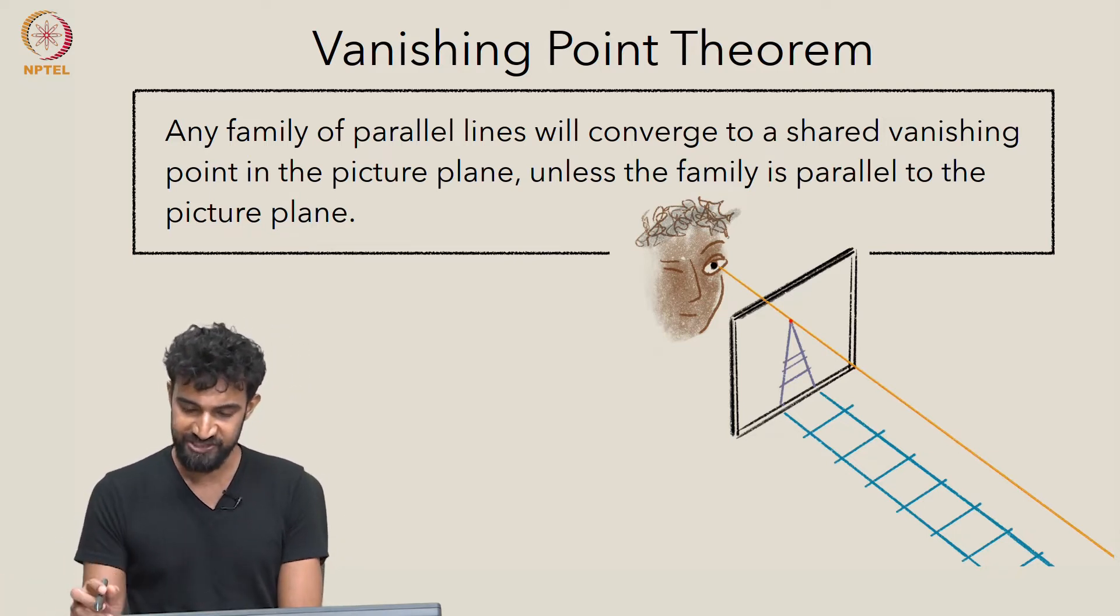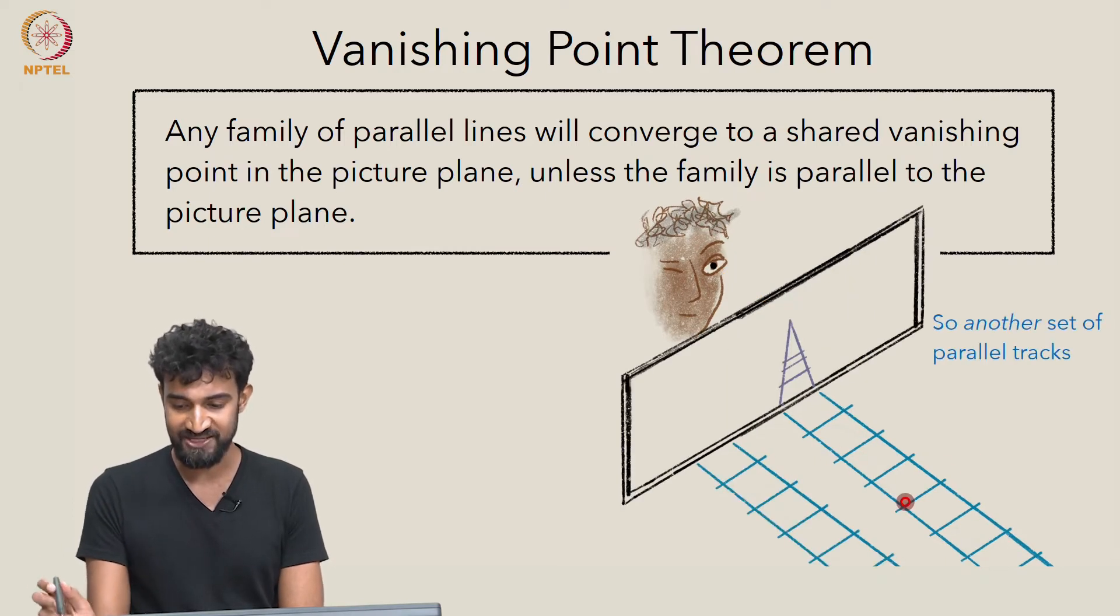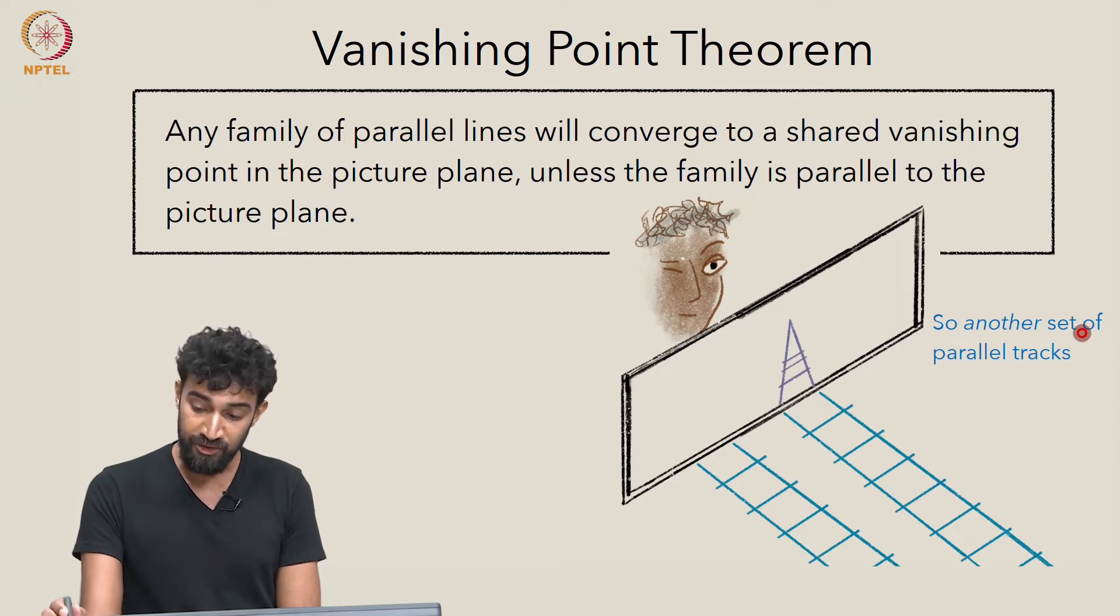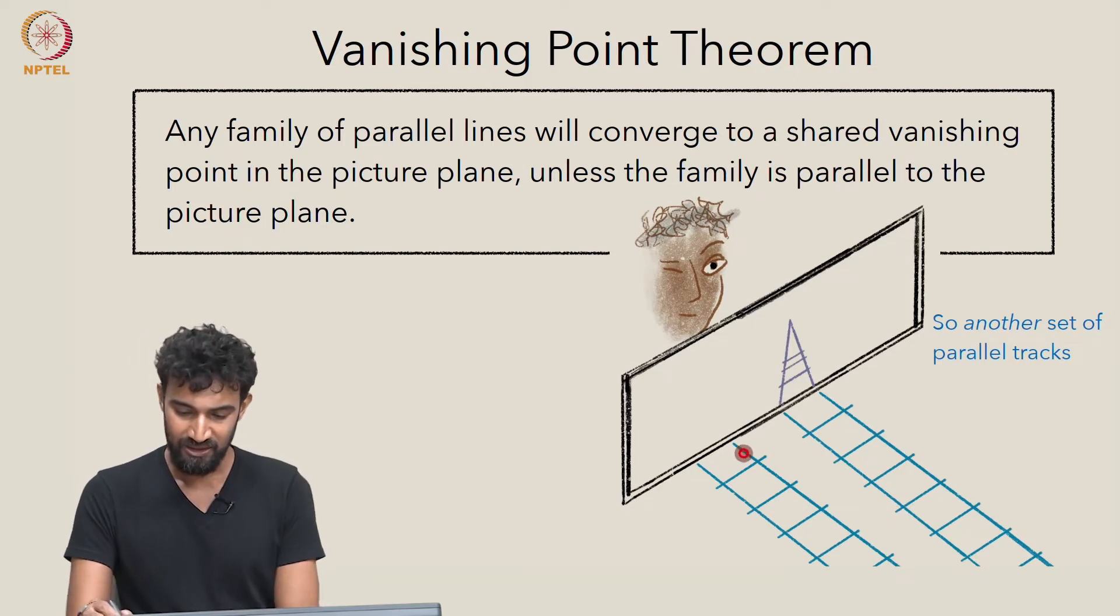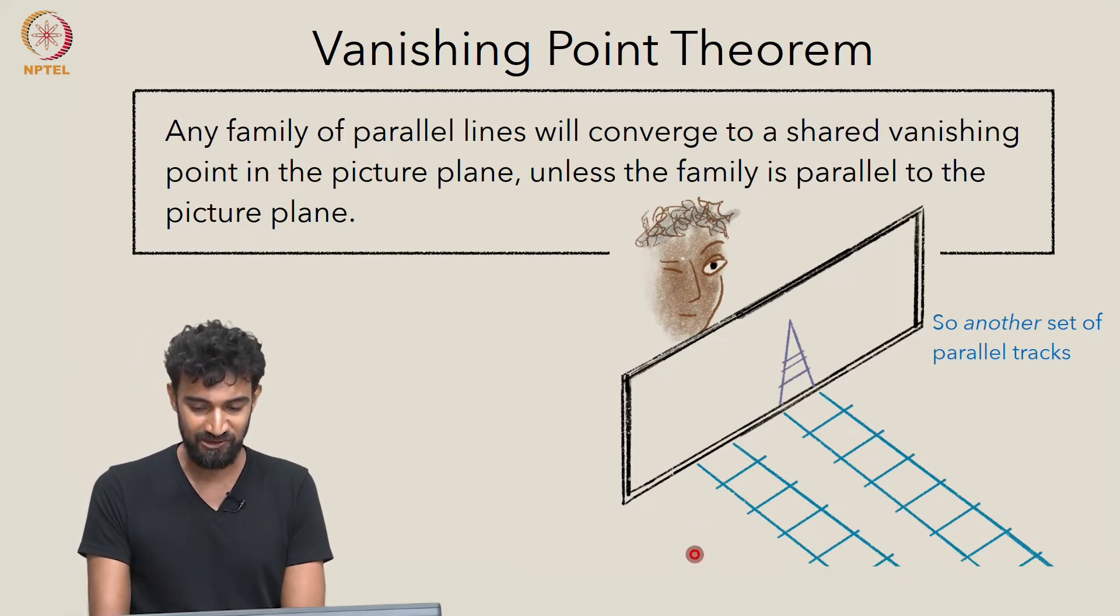So in particular, if we look at these side rails of the railway tracks, any other set of parallel lines, like say another set of railway tracks that's parallel to our original one, what's the image of that going to look like?